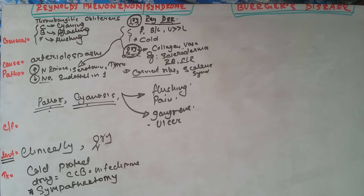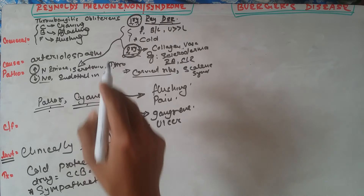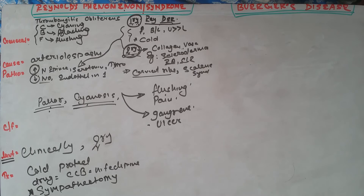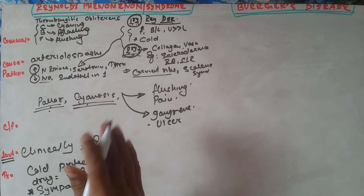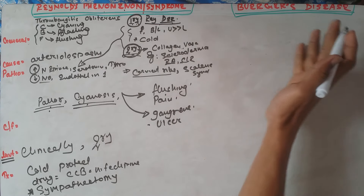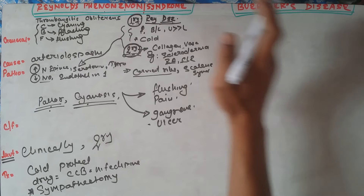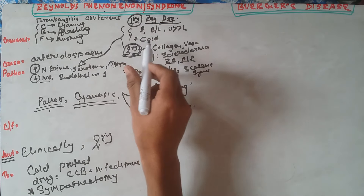Sympathectomy is done only in patients severely affected by Raynaud's vasospasm and is beneficial only for a short period — it is not a long-term therapy. Now we will correlate Buerger's disease with Raynaud's phenomenon. The key trigger in Raynaud's was cold exposure, whereas Buerger's disease is predisposed by smoking.